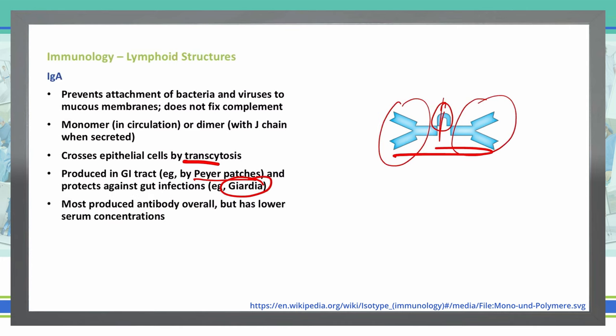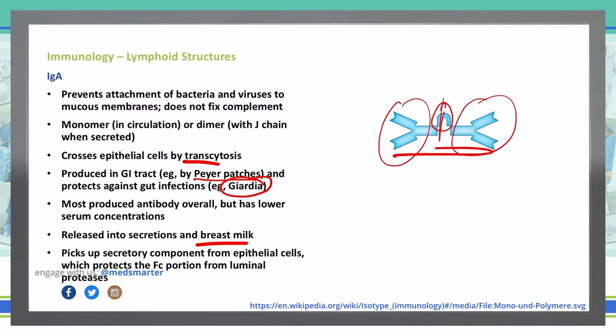IgA is the most produced antibody overall; however, their serum concentrations are going to be lower. They are released into secretions and breast milk — as noted earlier, IgG goes across the placenta, but breast milk infants will get IgA throughout breastfeeding as additional immune support from the mother. IgA also picks up secretory components from the epithelial cells, which protect the Fc portion from luminal proteases.